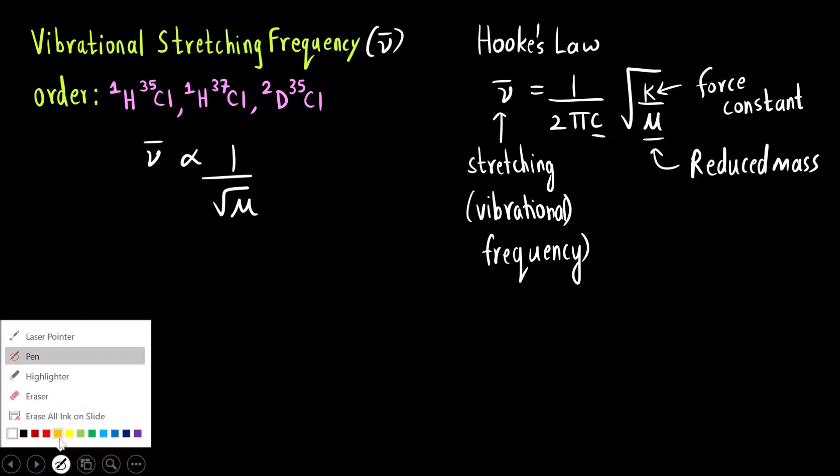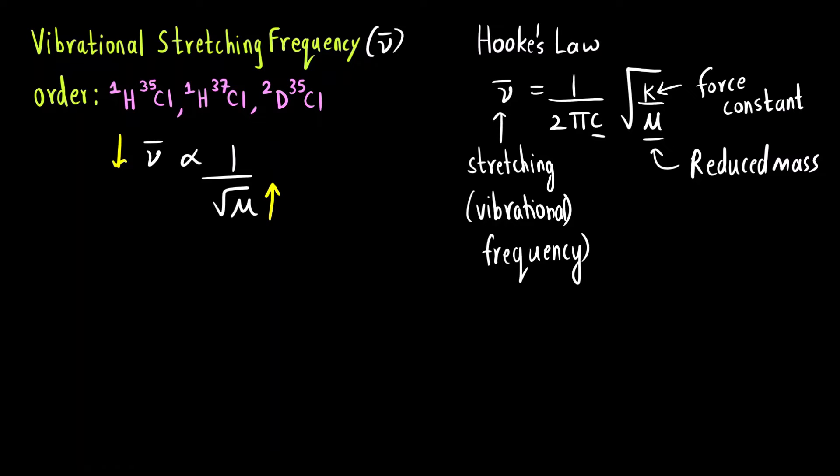Greater will be the reduced mass, lesser will be the vibrational stretching frequency. And what is the formula for reduced mass? Reduced mass is m1 into m2 divided by m1 plus m2. You can see numerator it is multiplication, right? And we know answer of multiplication is greater most of the times as compared to addition.